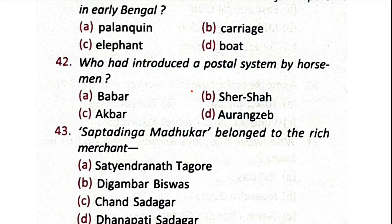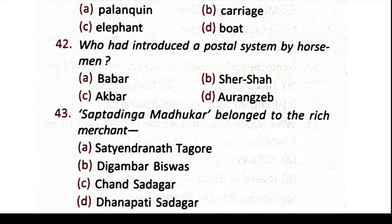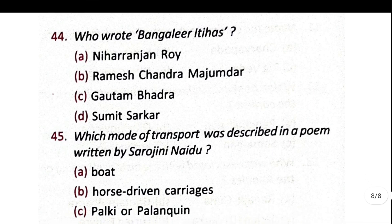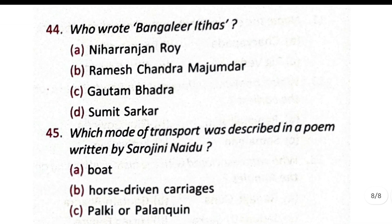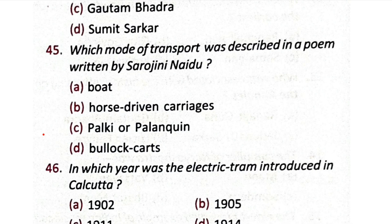Question number 42: who introduced a postal system by horsemen? The correct answer is B, Sher Shah Suri. Question number 43: Sabt Dhinga Madhukar belongs to the rich merchant — the correct answer is C, Chand Sadagar. Question number 44: who wrote 'Bengalir Itihas'? The correct answer is A, Nihar Ranjan Roy.